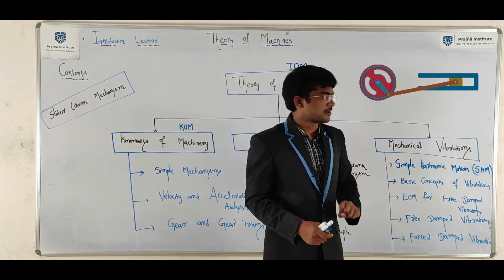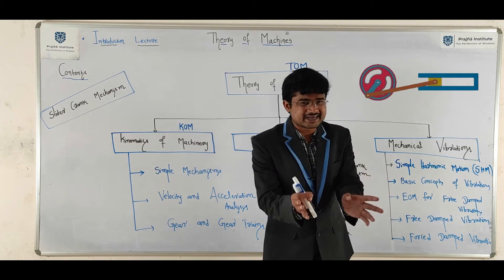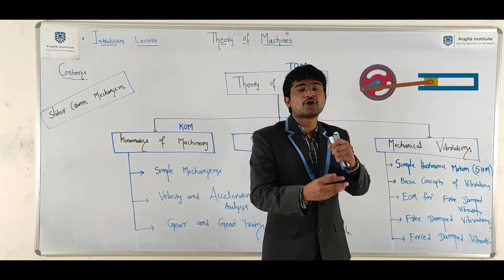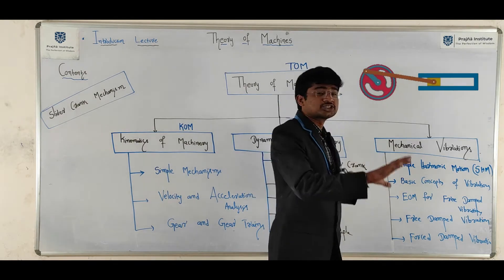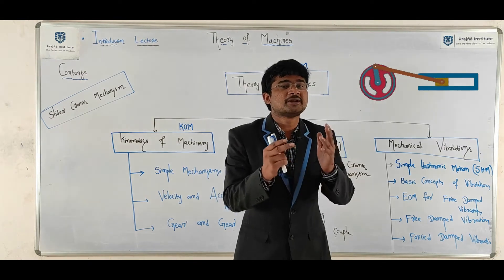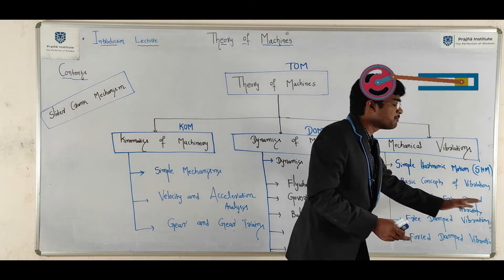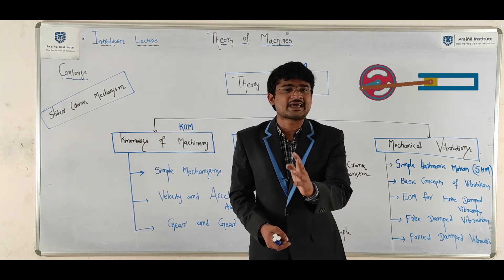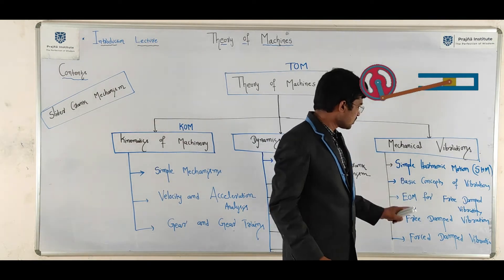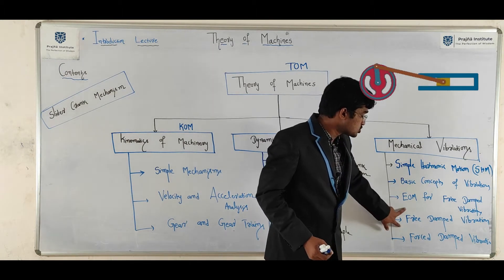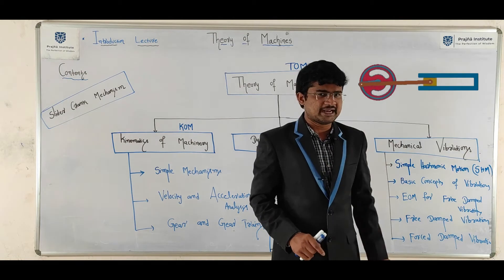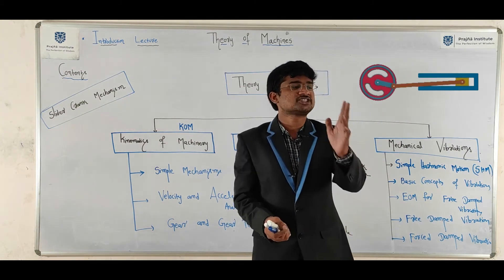For mechanical vibrations, you will start with simple harmonic motion. Basic concepts include springs connected in series and parallel. After that, vibratory motion is divided into longitudinal vibrations, transverse vibrations, and torsional vibrations. You need to get the equation of motion for each type. The key is to draw the free body diagram for the spring-mass-damper system — once you are expert at that, you can easily get and solve the equation of motion.